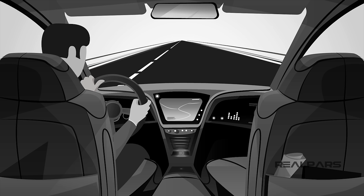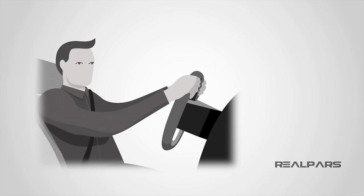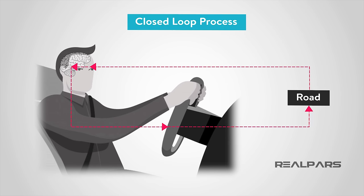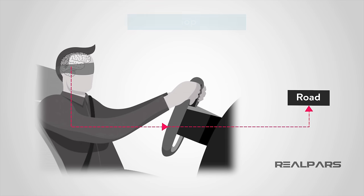You don't do hundreds of calculations to determine your point of attack. You intuitively, after years of driving, know what you need to do to safely switch lanes. Because you are not blindfolded when you drive, your eyes give feedback to your brain, allowing you to control this process through reference feedback. This control is considered a closed-loop process. But consider a blindfold — you would have no way of knowing where you are on the road. This type of control would be called open-loop control.